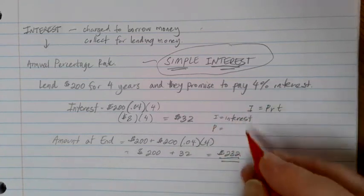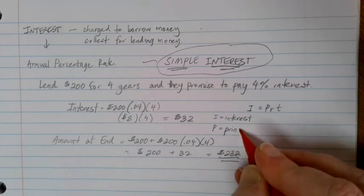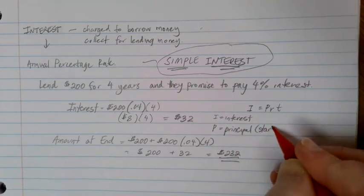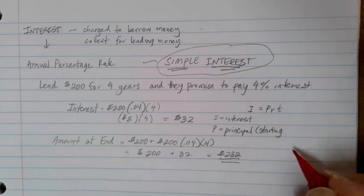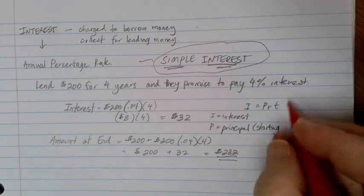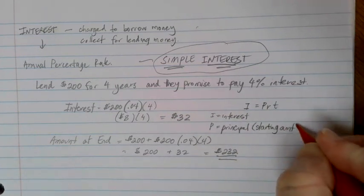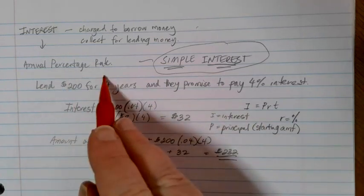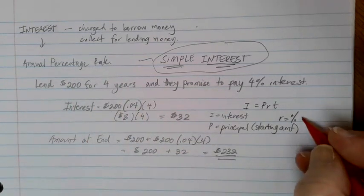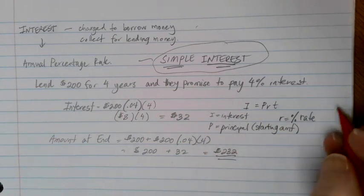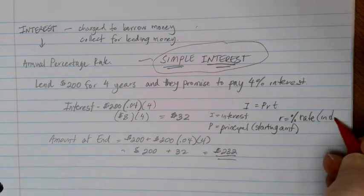P is a financial term for what we call the principal, and essentially this is the starting amount. So it's either how much money you are putting in savings or it's how much money you're lending out or borrowing. R is that annual percentage rate that we're given, and any time that we're dealing with a percentage in a formula, make sure that it's in decimal form.